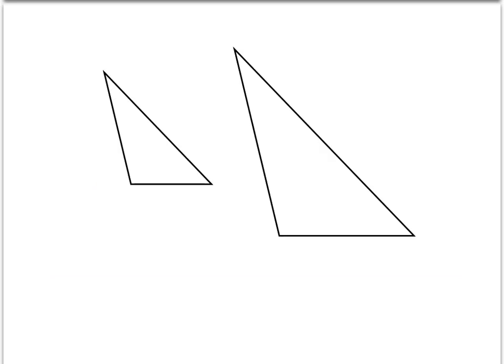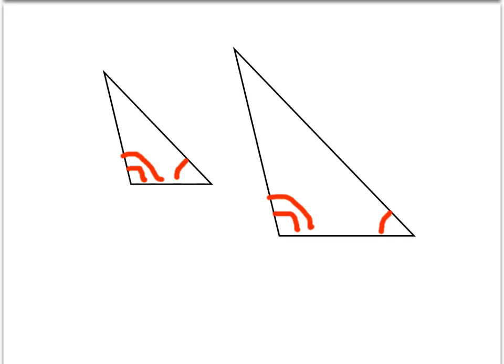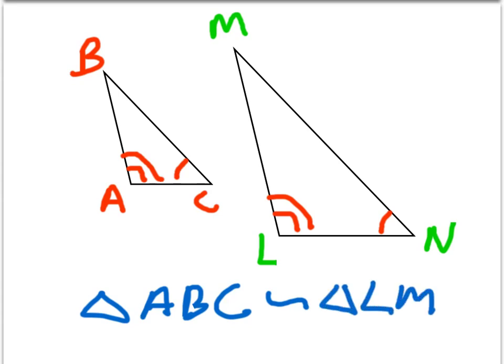In these two triangles, let's pretend that we knew that these two angles are congruent, and also that these two angles are congruent. That's enough to prove that these two triangles are similar — the angles are congruent and the triangles are similar. So if the two triangles are called ABC and LMN, the statement we would use to show that they're similar is: triangle ABC is similar to triangle LMN. That demonstrates AA similarity.